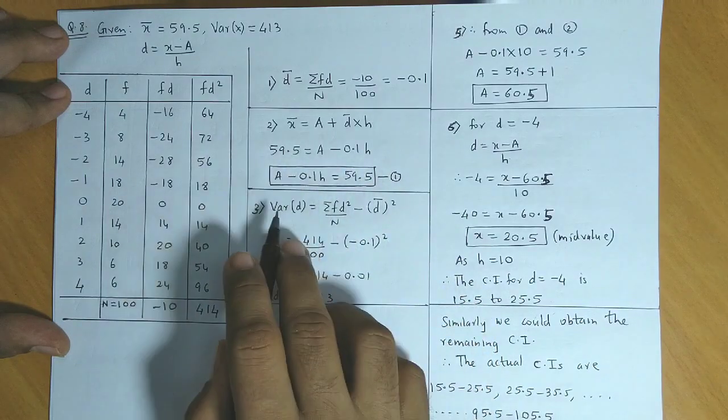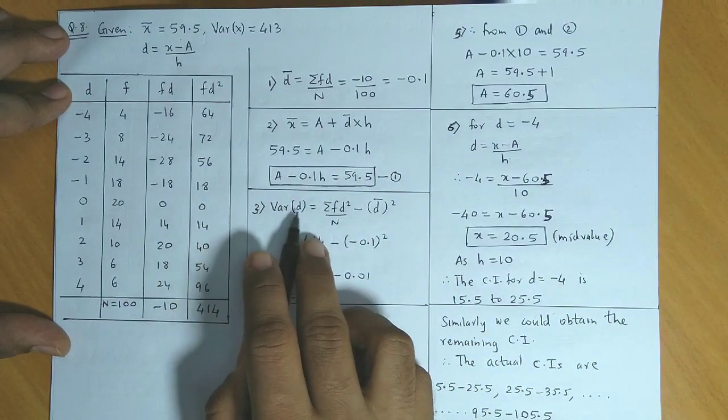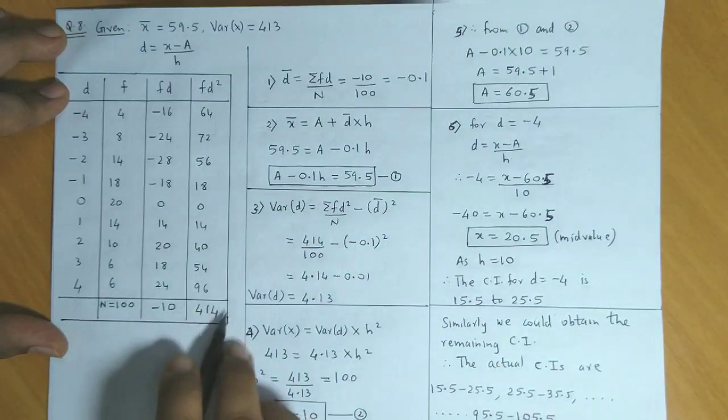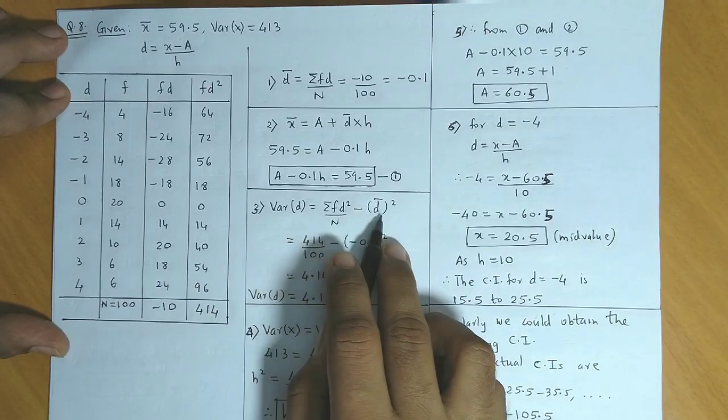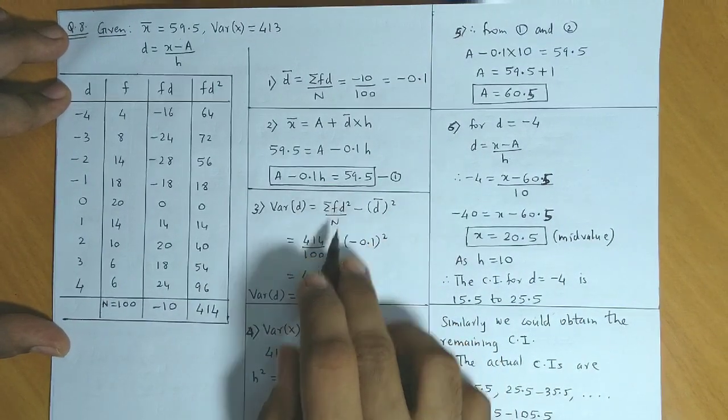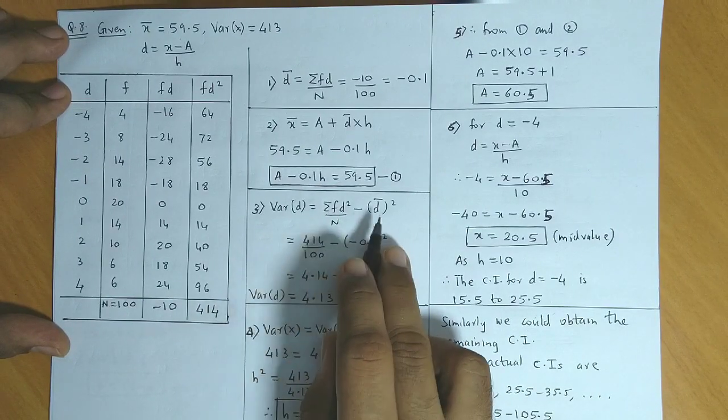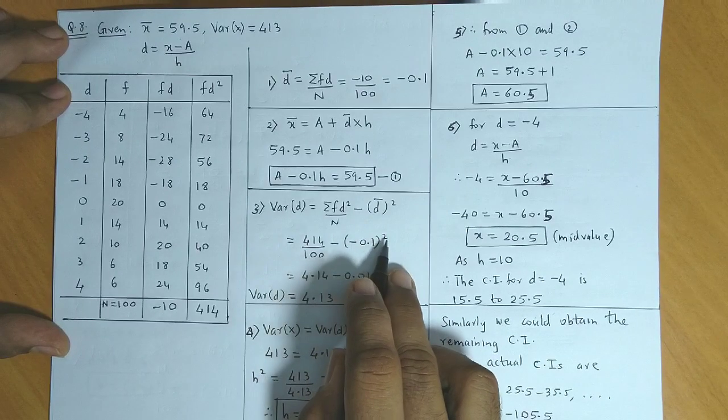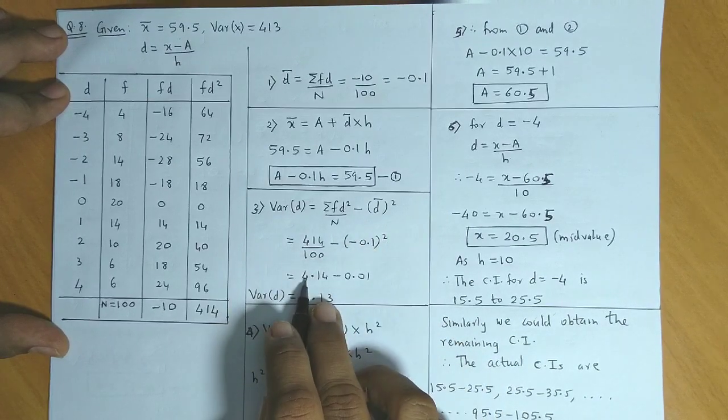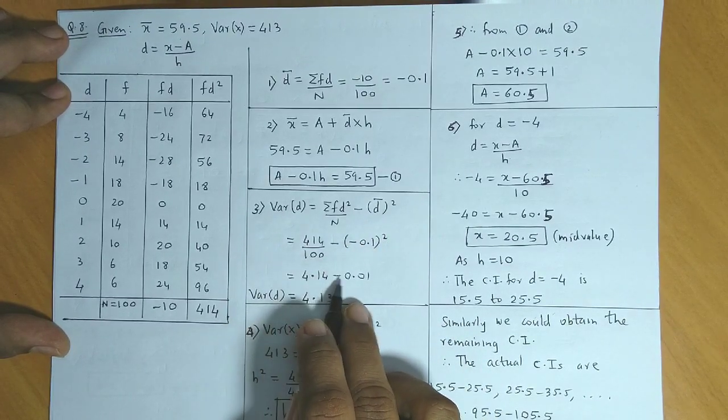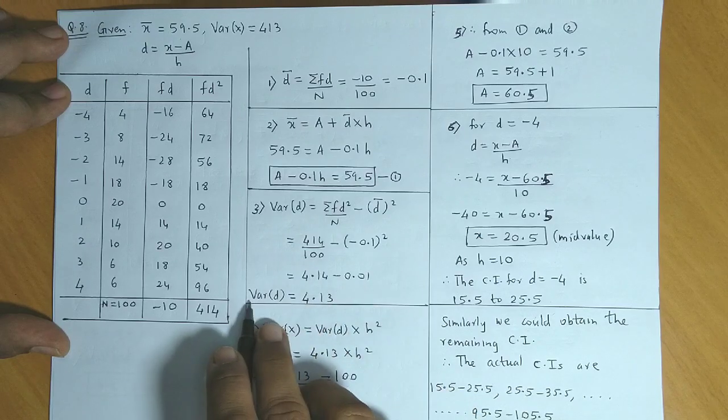Next, variance of d is summation fd squared divided by n minus d̄ squared. fd squared is 414, n is 100, minus d̄ which is minus 0.1 squared. This becomes 4.14 minus 0.01, so variance of d is 4.13.